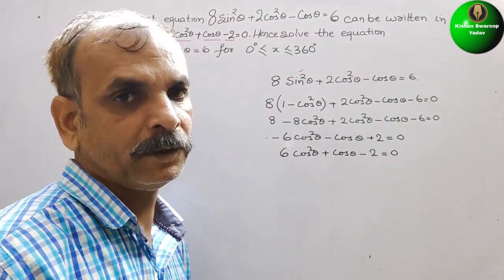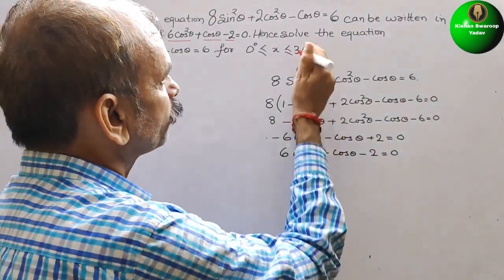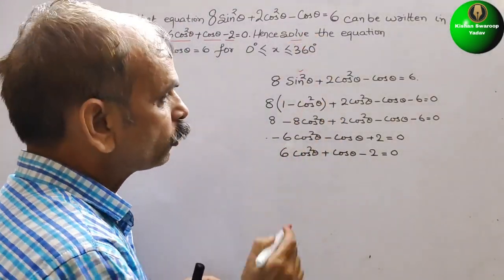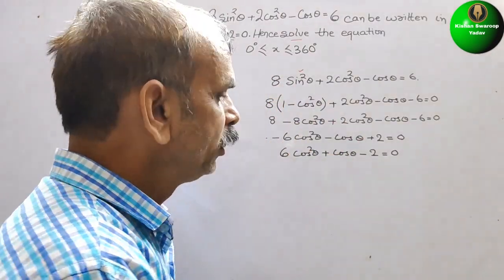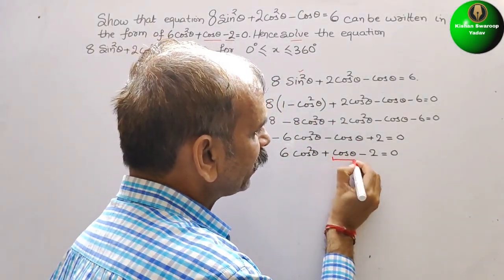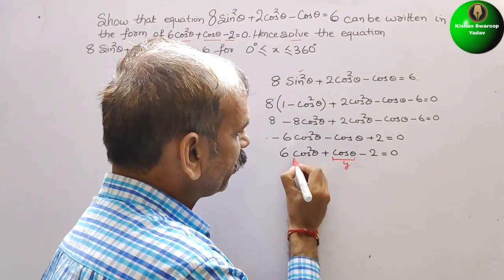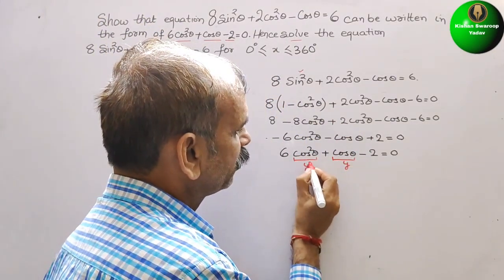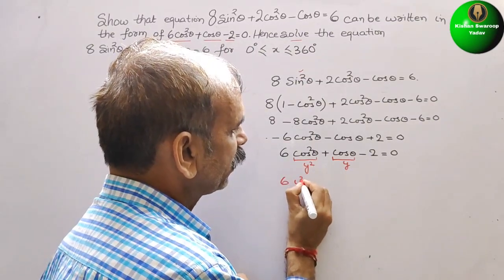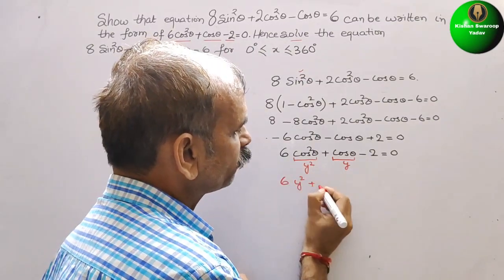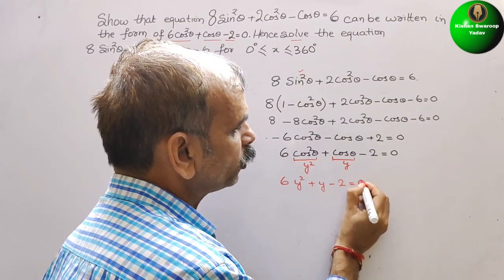Now we solve the equation. We substitute y = cosθ, so cos²θ becomes y². The equation becomes 6y² + y - 2 = 0.